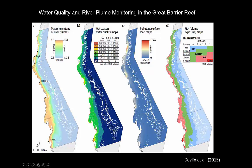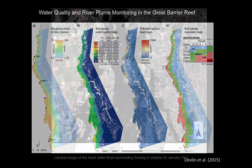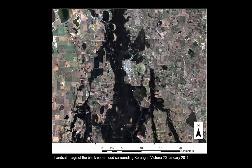Finally, you can turn that into risk maps showing where water quality risk is highest and where it is lowest. That was ocean water quality remote sensing. You can use pretty much the same principles for inland water quality remote sensing as well.